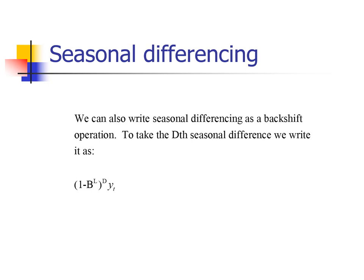I can write seasonal differencing as 1 minus B to the power L, where L is the number of periods in a year — so for monthly data, L will be 12.